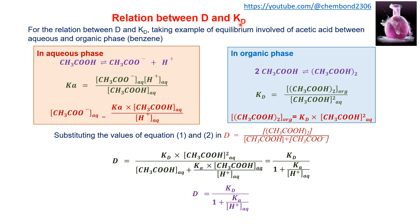The relation between D and KD uses the acetic acid example. In aqueous phase, acetic acid ionizes to produce acetate anion and hydrogen ion, with Ka equal to acetate anion times H⁺ divided by unionized acetic acid. Rearranging gives acetate anion concentration equal to Ka times acetic acid divided by H⁺ ion.